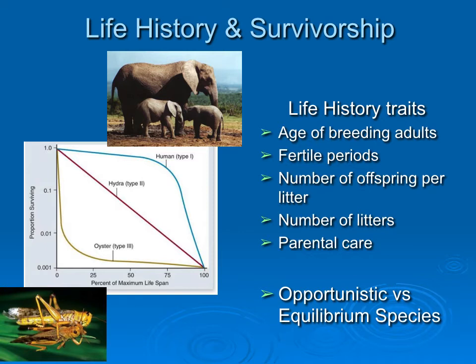Organisms with a Type I survivorship curve generally have a long life, may mature slowly, have multiple breeding periods and produce one or two offspring each time, and those offspring take a long time to grow. This is called an equilibrium life history — like elephants or humans. Organisms with a Type III life history are opportunistic: because the early period is very risky, you want to mature as quickly as possible, produce a lot of offspring quickly, and not invest much parental care. You mature quickly, have fewer fertile periods, but produce many offspring and let them go. That's the opportunistic strategy.